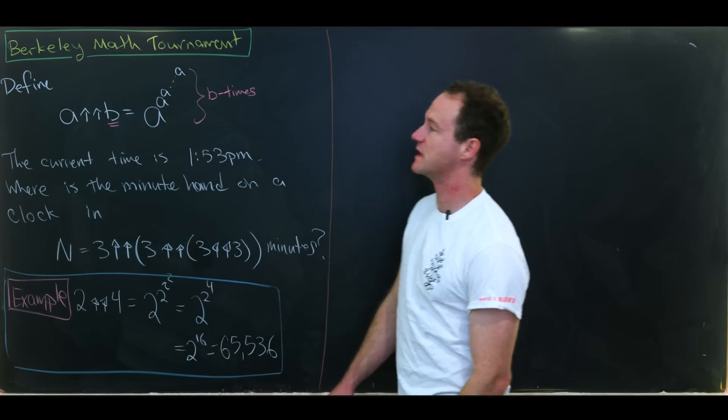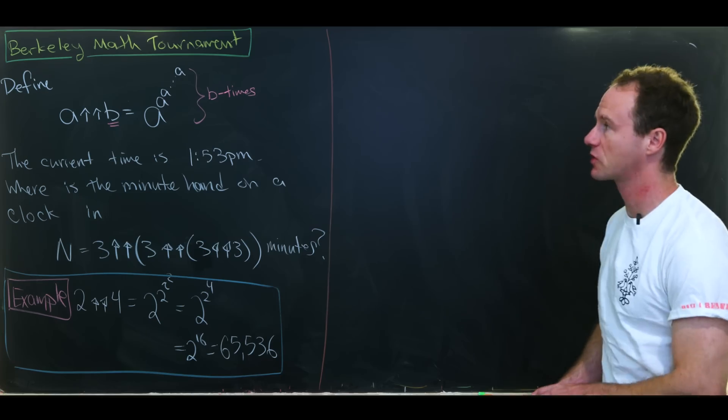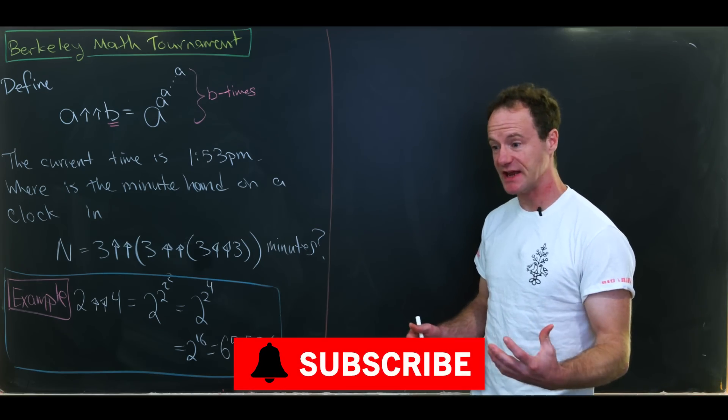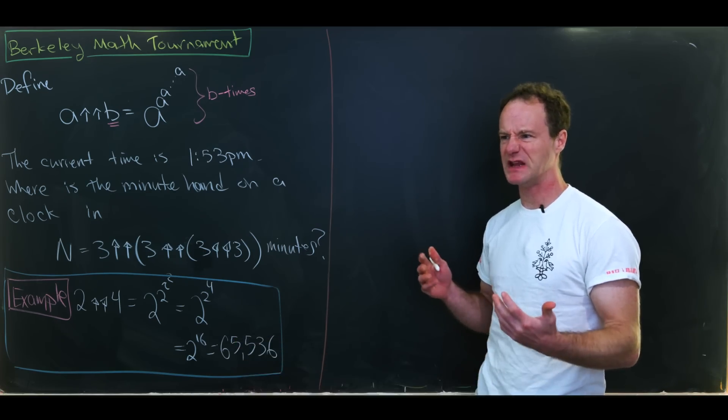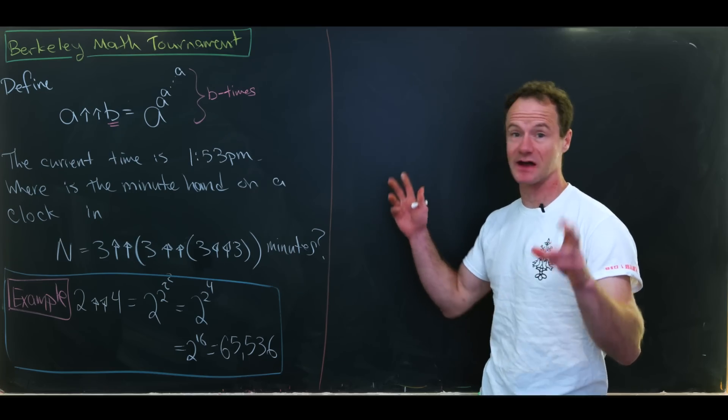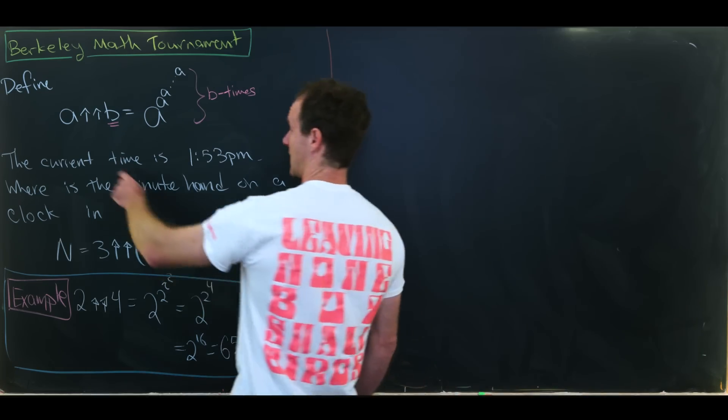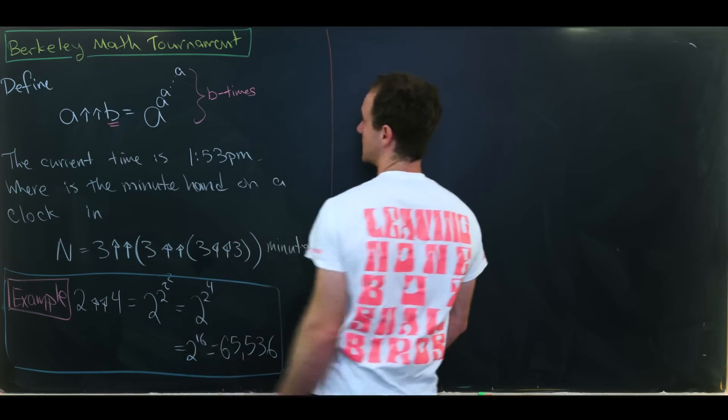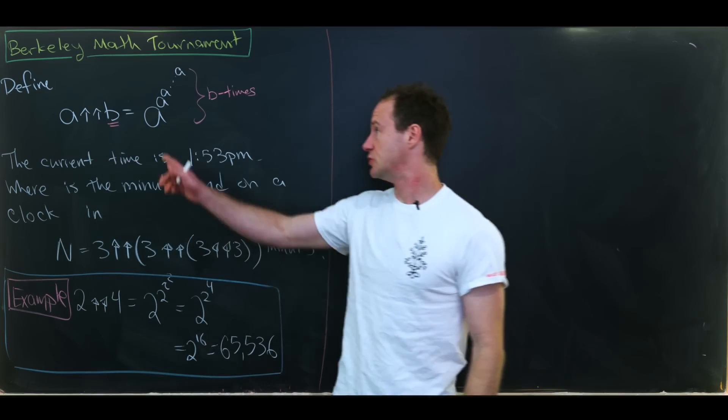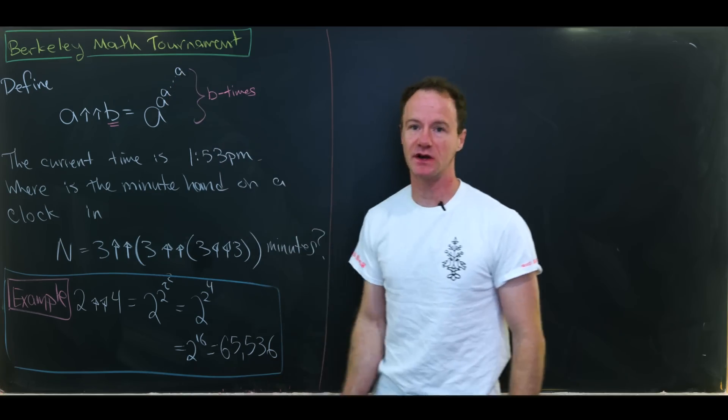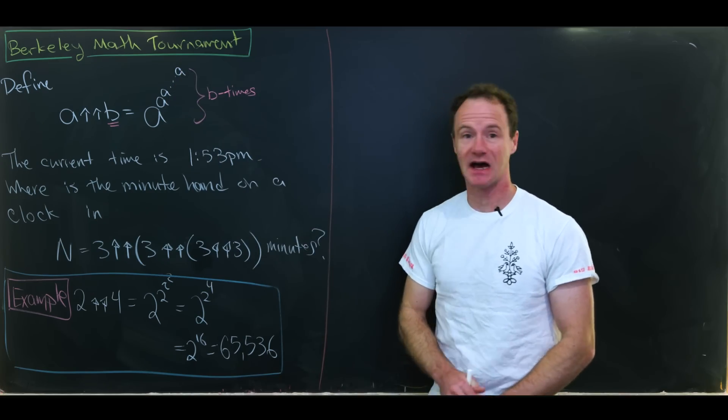Today I've got a nice problem from the 2012 Berkeley math tournament and it involves some nice notation which gives us repeated exponentiation or really like a power tower. So let's define a arrow arrow b to be equal to a to the power of a to the power of a to the power of a so on and so forth b times.